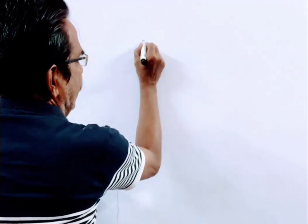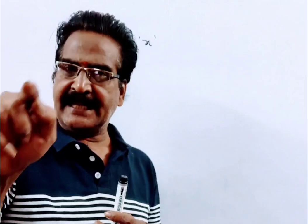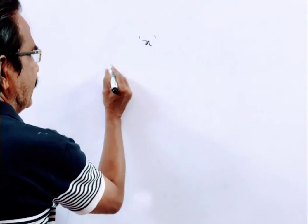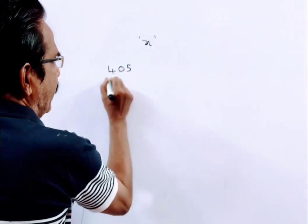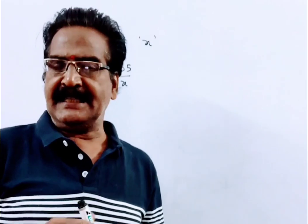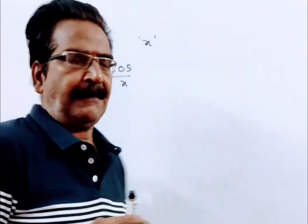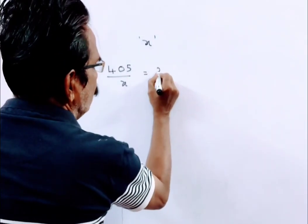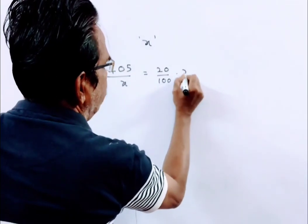Friends, say the number of children is x. Now, 405 sweets were equally distributed among x children, then each child gets 405 divided by x. And it is given that each child gets 20% of the number of children, so 405 by x is equal to 20% of x.